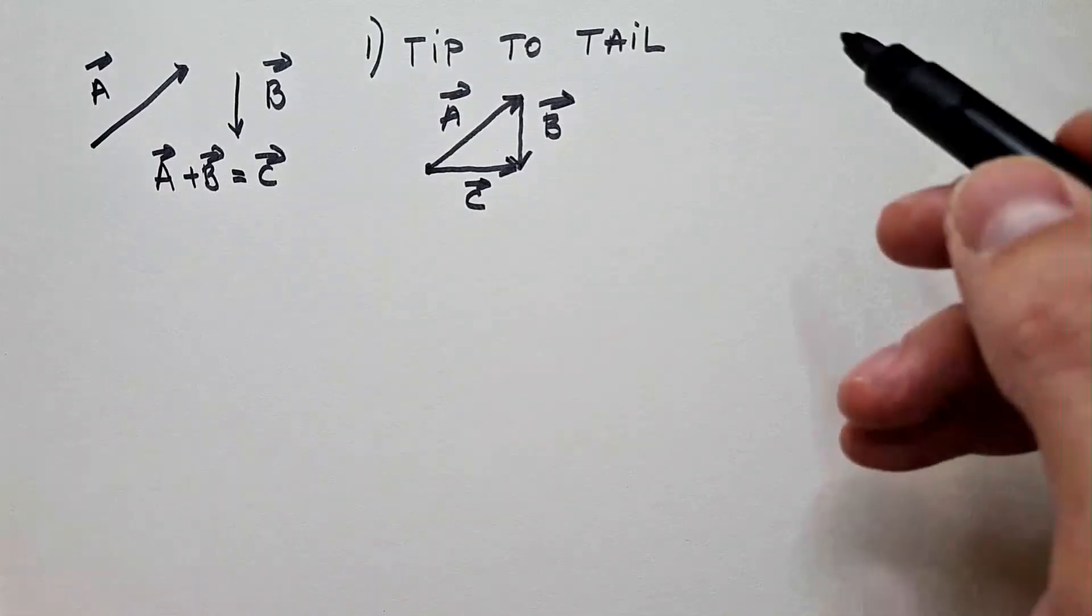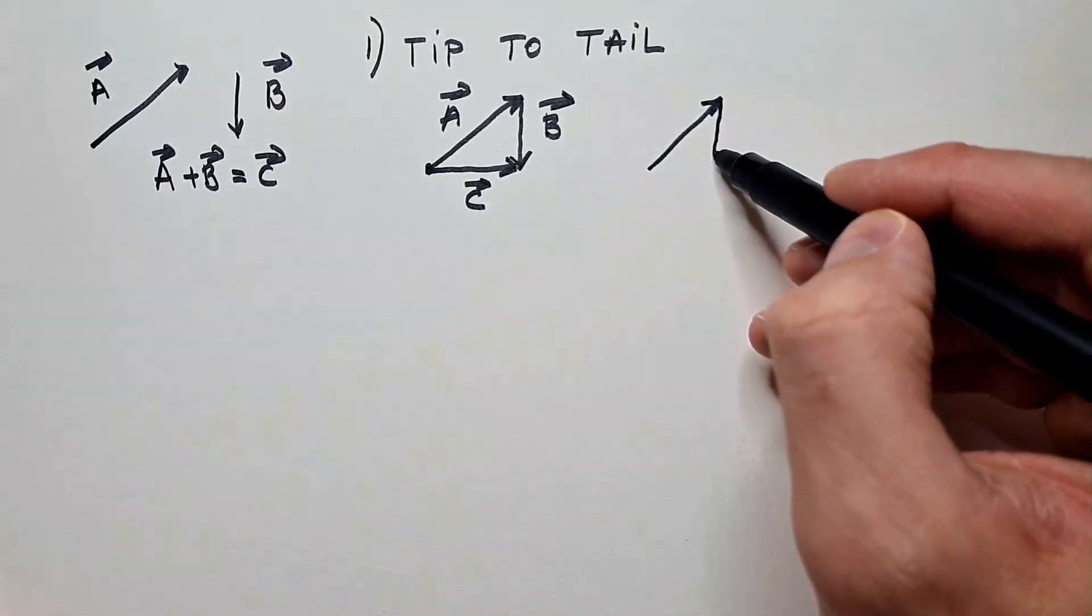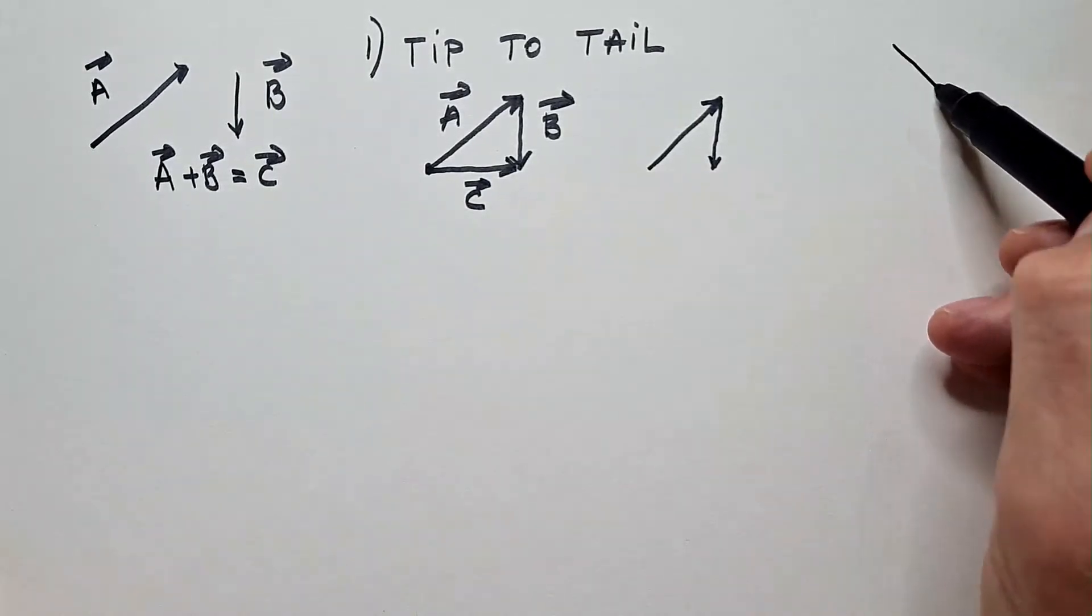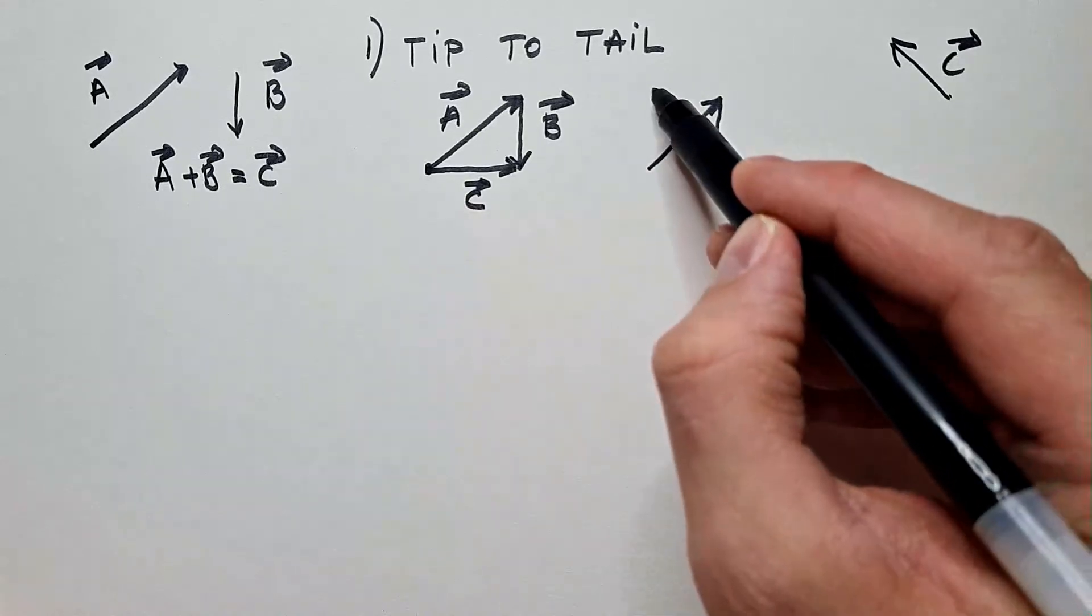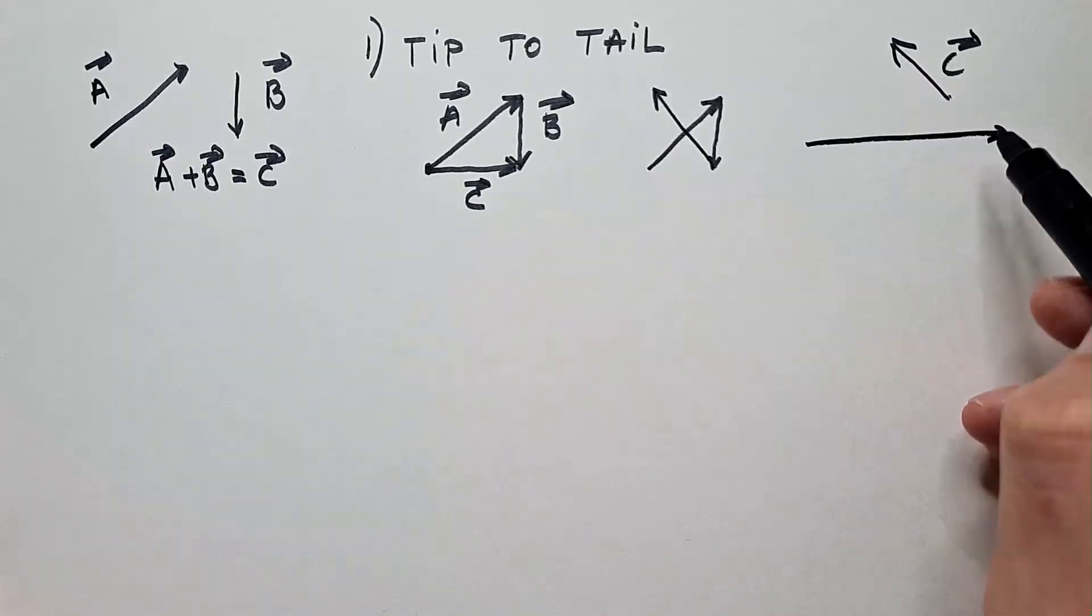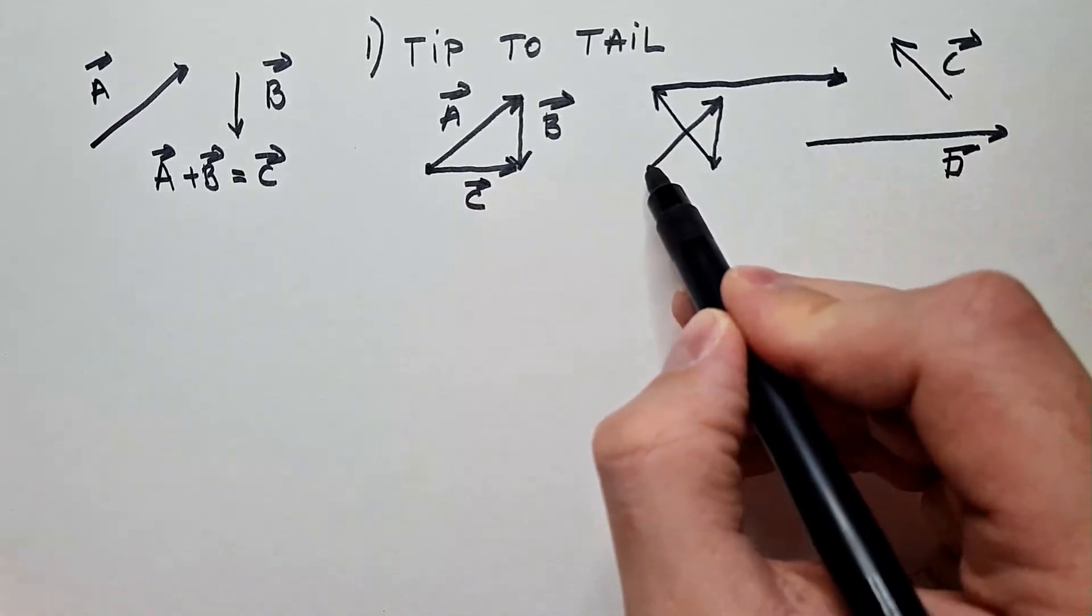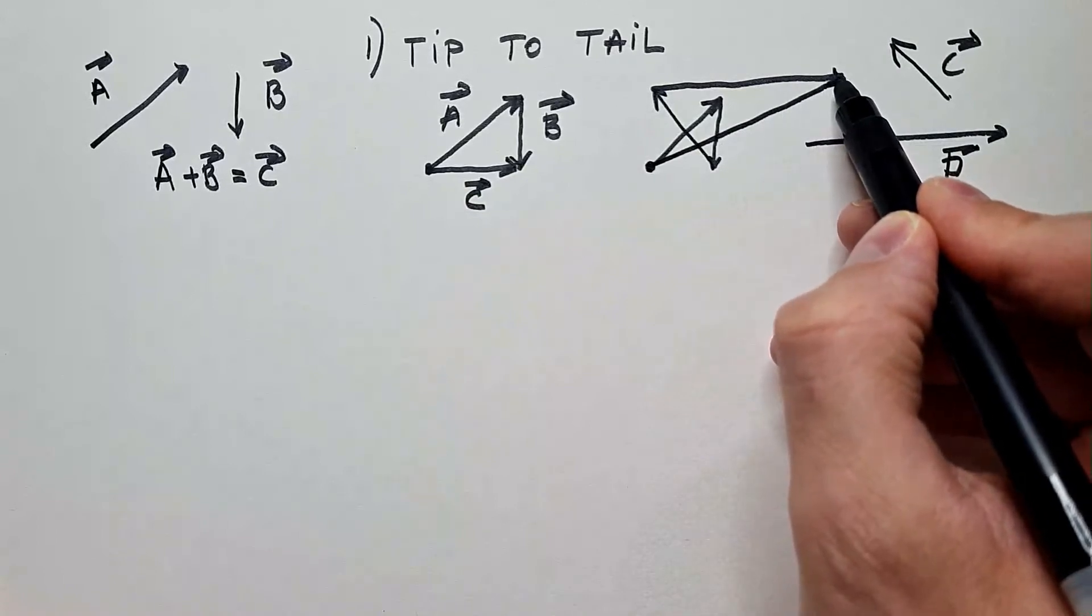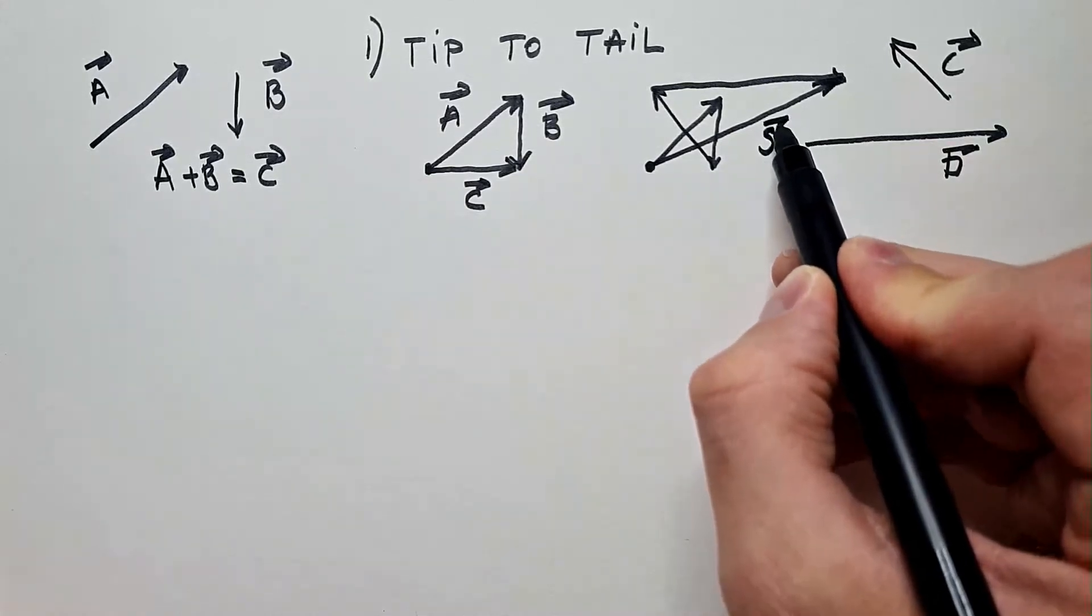We can add multiple vectors. Let's say we have A and then we put B over here. Now let's say somebody gives us vector C that looks like this. Well I just take this vector and I put it over here. Another fellow comes and says there is vector D that looks like this. Well I take this vector and I put it over here. What is the result? Well I go from the beginning tail of A and I connect with the tip of the last vector which is D and this is my final vector. Let's call it S, sum of all these.